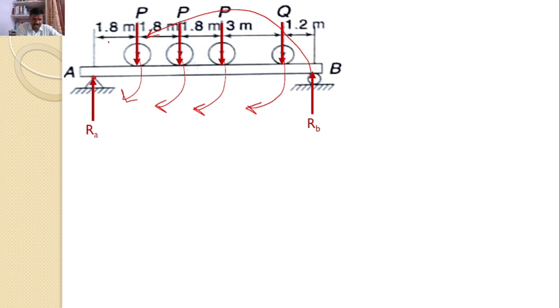And you know all the distances. This distance is 1.8 and this is another 1.8, this is another 1.8, this is another 3 meters and this is another 1.2 meters. Since we know all the distances, I can comfortably apply the moment equation at point A.